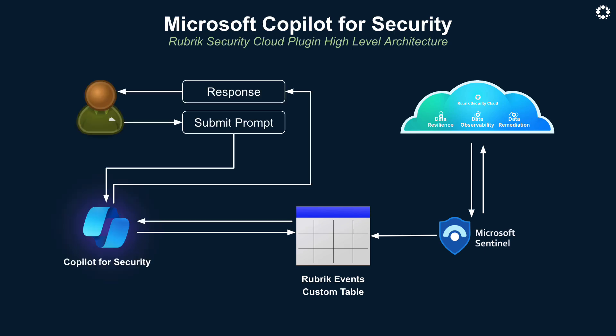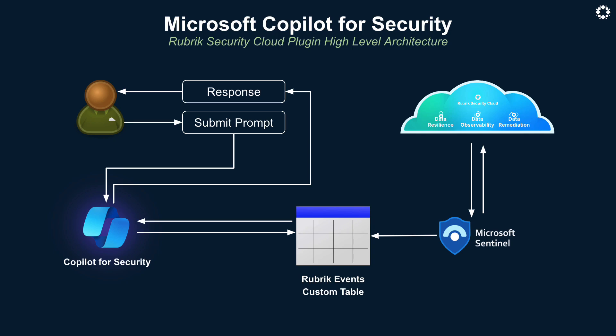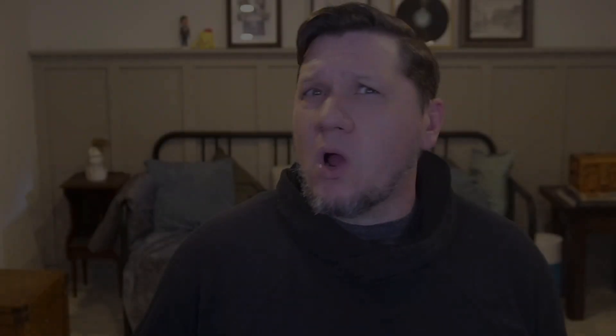The Copilot for Security integration leverages these same custom tables in order to gain access to the Rubrik data. In the end, joint Microsoft and Rubrik customers are able to harness the power of Gen AI in order to summarize these vast data signals, cut through all the noise, and generate key insights to help both protect from and respond to cyber threats before too much harm has been caused.